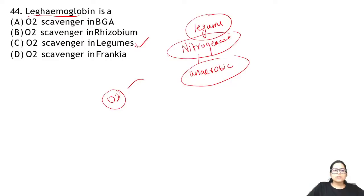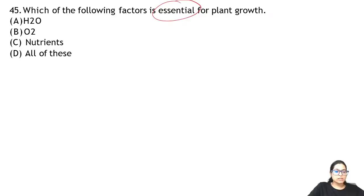Question 45: what is essential for plant growth? Water, oxygen, and nutrients — all of these are essential for plant growth.